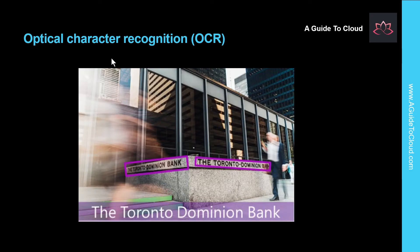The last one is optical character recognition, or OCR. OCR is a technique used to detect and read text in images. You can use OCR to read text in photographs — for example, road signs or storefronts — or to extract information from scanned documents such as letters, invoices, or forms.